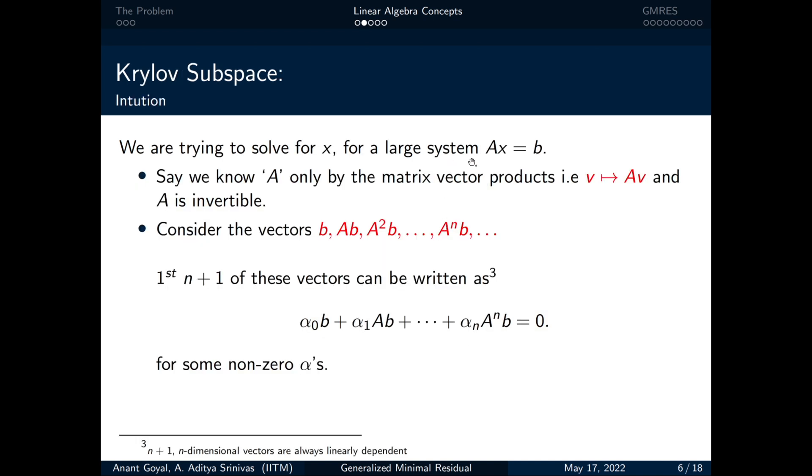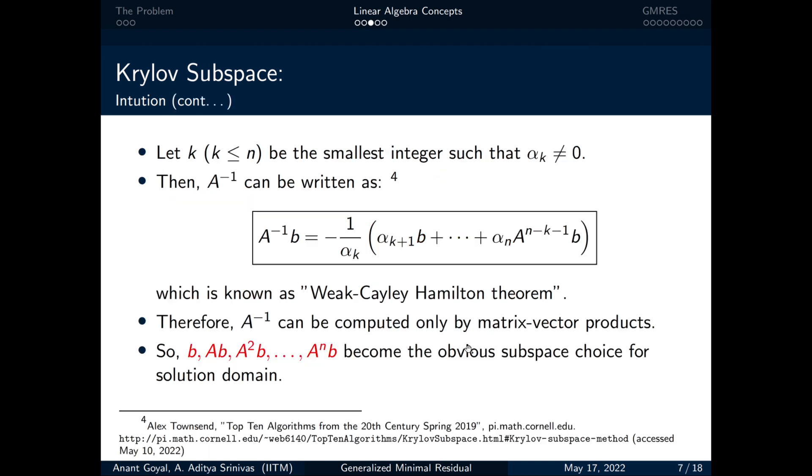Let us say we want to find the solution for Ax equal to b where we know the matrix A only by the matrix vector products and A is an invertible matrix. Now, we will assume some vectors such as b, Ab, A²b and so on. Out of these vectors, we pick the first n plus one vectors each of n dimensional which will be dependent. There will be some non-zero alphas in this linear combination. Assume the first smallest non-zero alpha for the vectors to be dependent be αₖ.